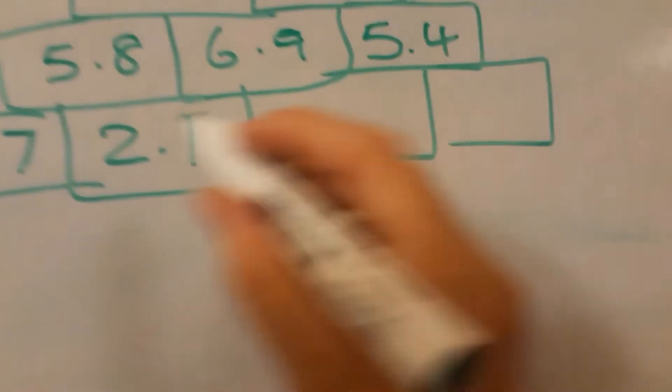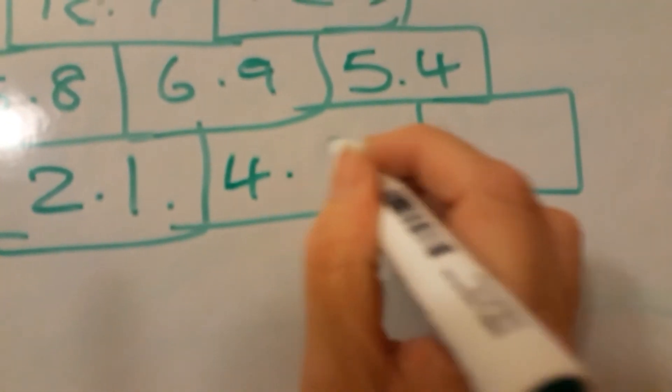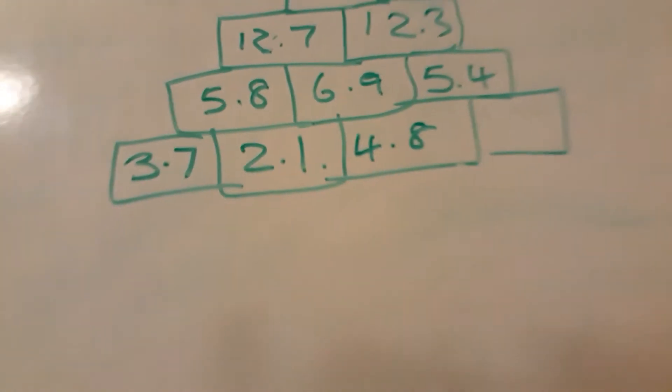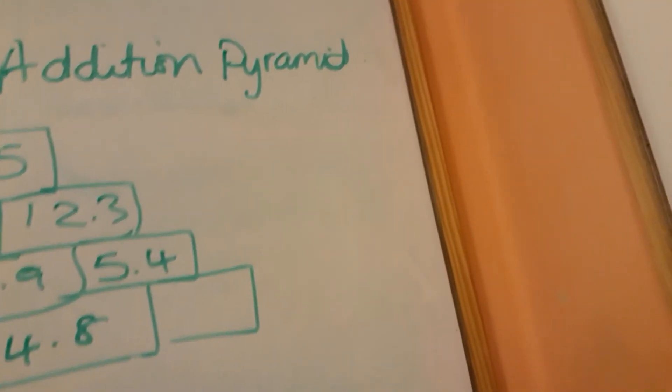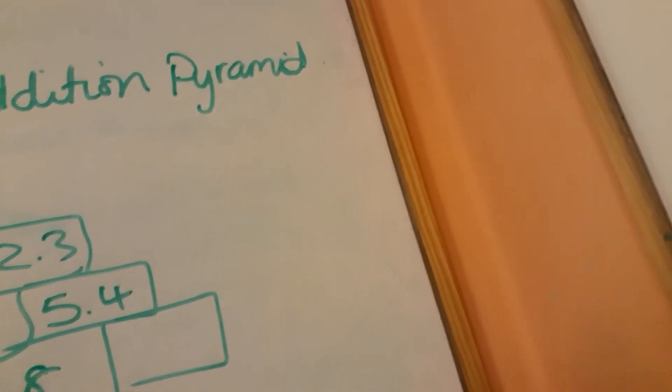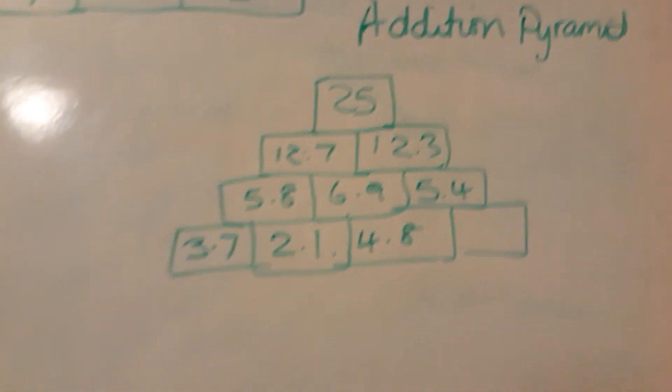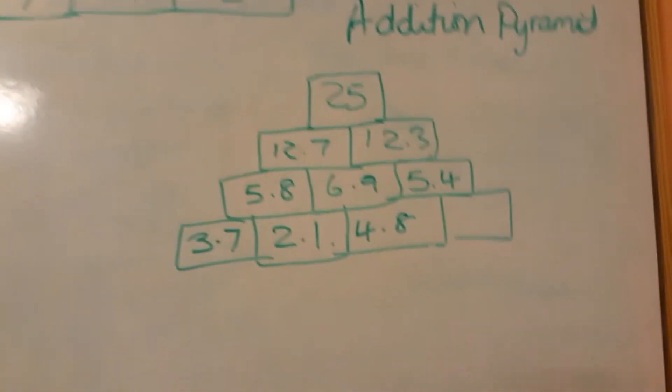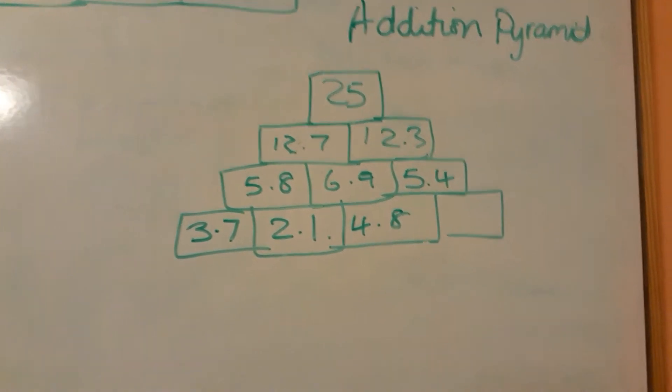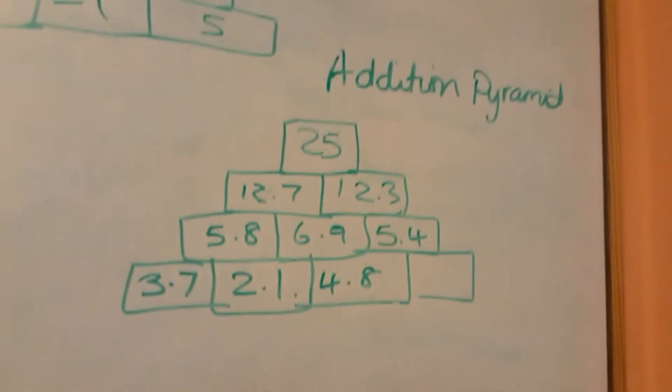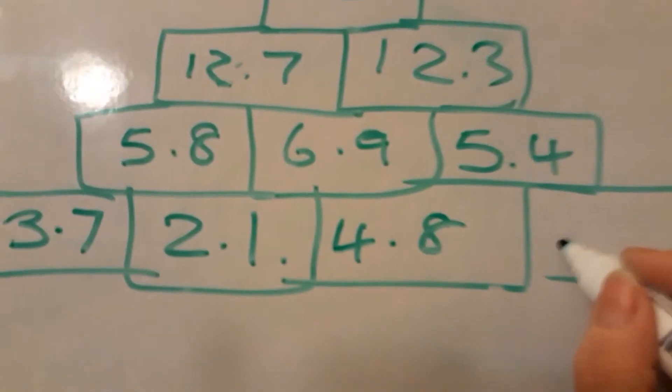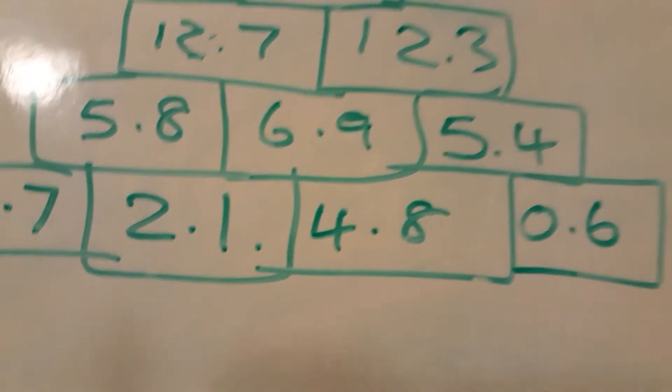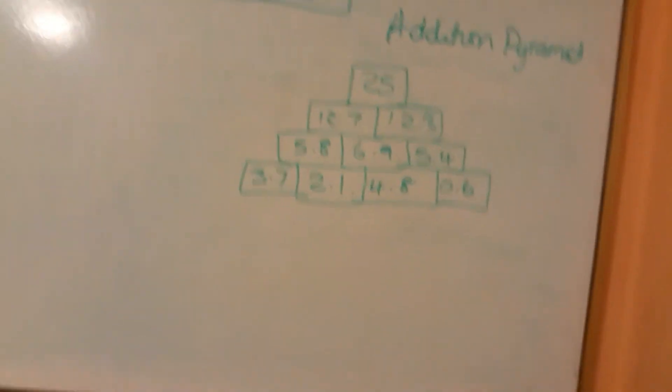And then we do these two, so 4.8. That's these four, five, six, eight, nine, so yeah. And the last one, and that is 0.6. So yeah, so that's the addition.